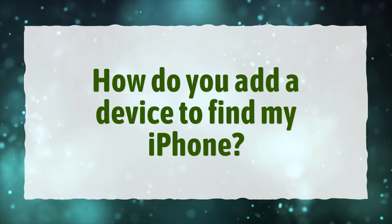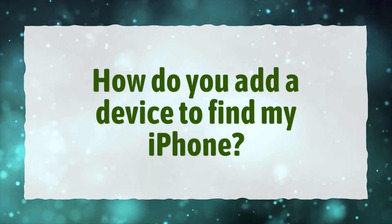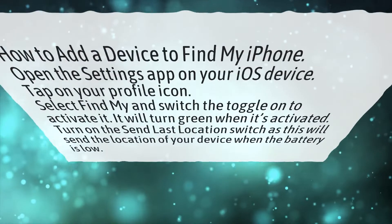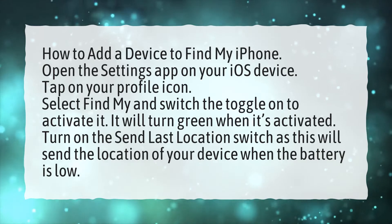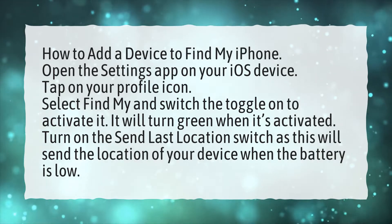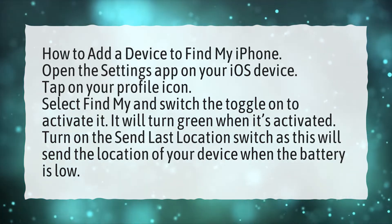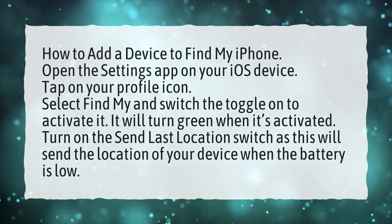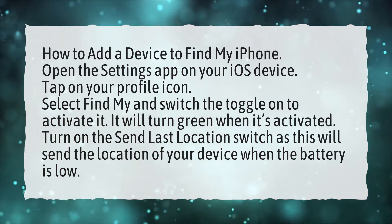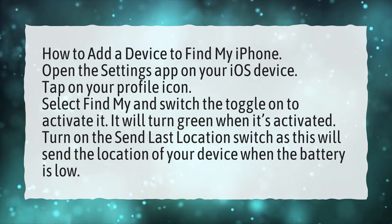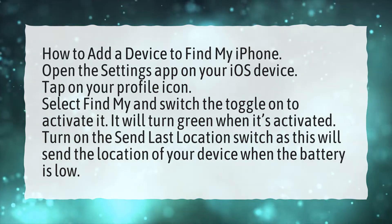How do you add a device to Find My iPhone? Open the Settings app on your iOS device. Tap on your profile icon. Select Find My and switch the toggle on to activate it.